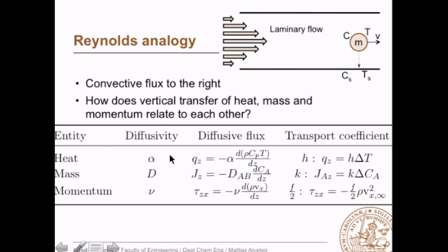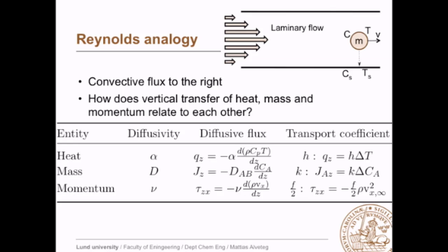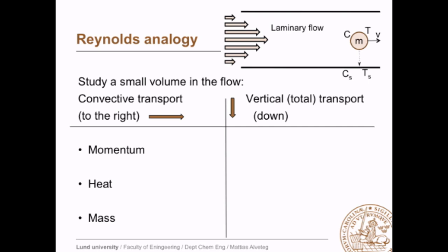For heat, mass, and momentum, we have the diffusivities alpha, D, and nu. We have diffusive flux according to these equations, and we have transport coefficients h, k, and f/2, where f/2 is Fanning's friction factor. Let's compare the different transport rates. We have convective transport to the right — of momentum, heat, and mass — and we also have vertical transport downward. If we have laminar flow, that is essentially diffusion. If we have turbulent flow, it would be both convection and diffusion, and we will come back to that later.